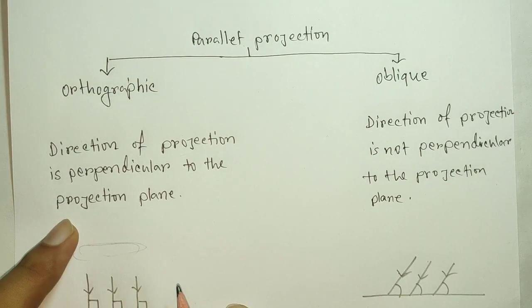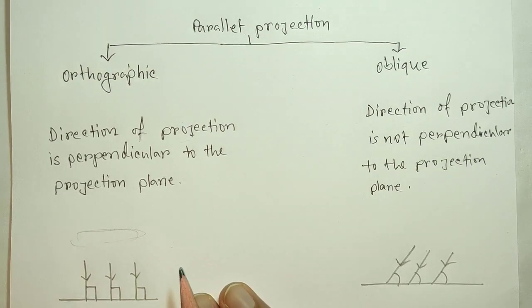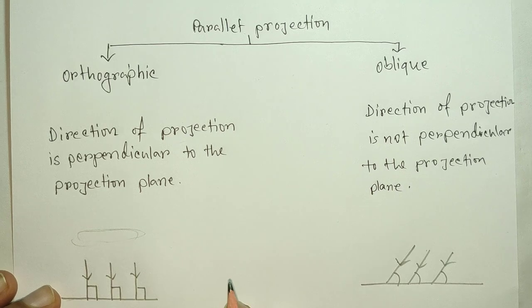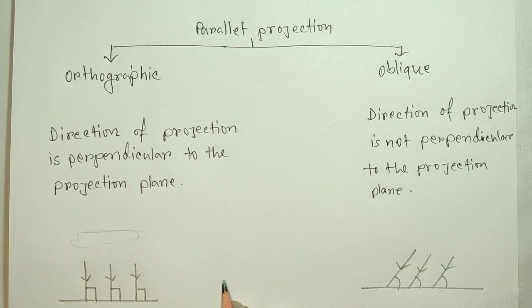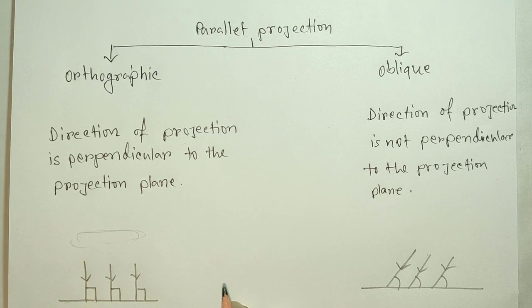The orthographic projection uses a 90-degree angle, and the projector lines are parallel. It gives us the top view, side view, and front view of an object.